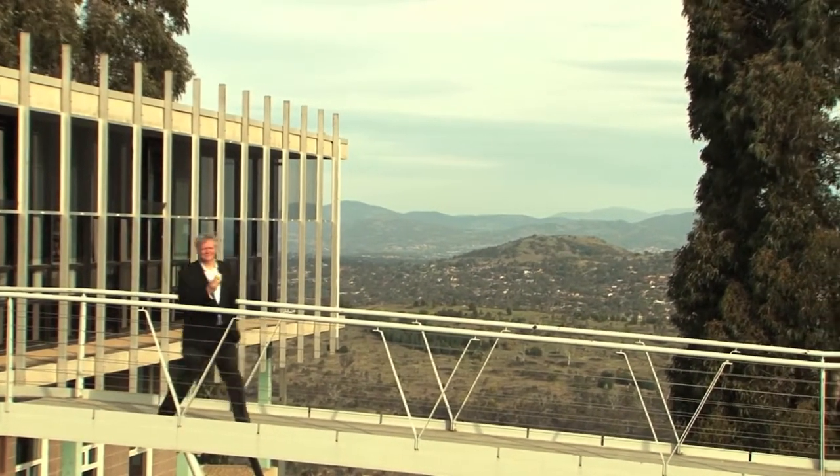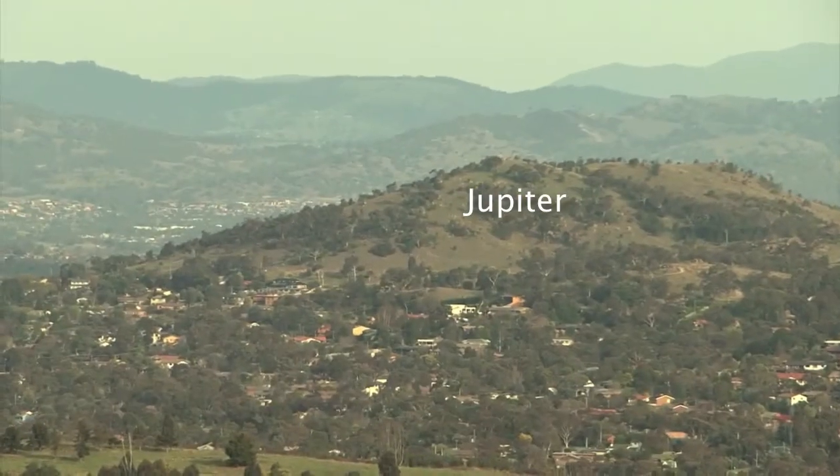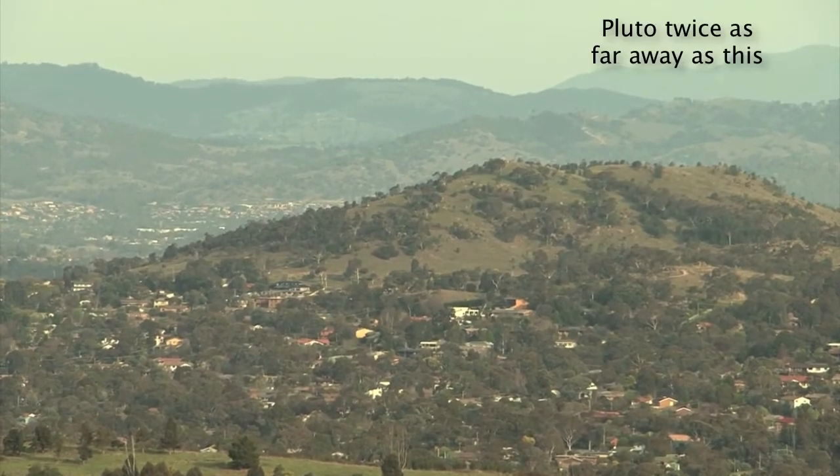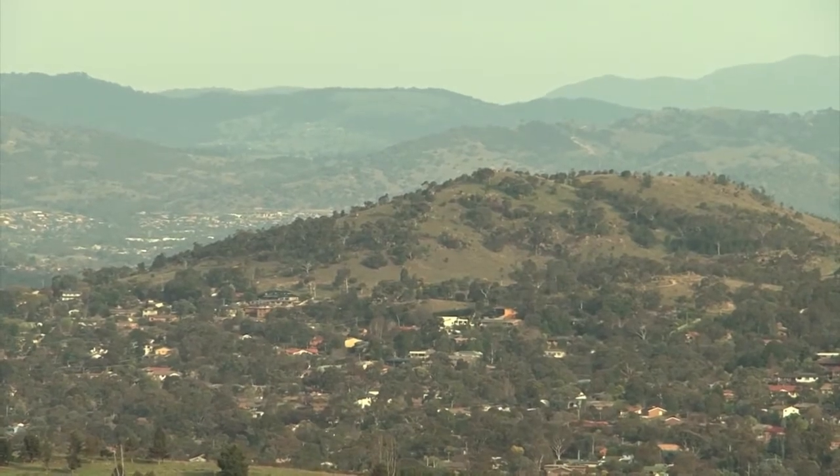Jupiter would be the size of a car on that hill. Pluto would be about twice as far away as this mountain. That's the solar system. To get to the nearest other solar system, Alpha Centauri, you'd have to go 25 times around the world.